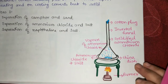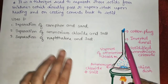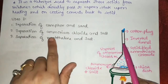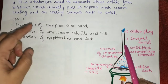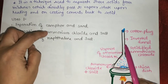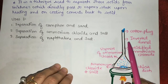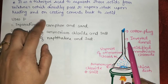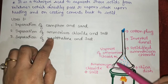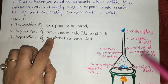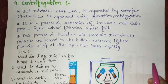This sublimation technique can be used to separate camphor from sand, ammonium chloride from salt, or naphthalene from salt. Camphor, ammonium chloride, and naphthalene all show the property of sublimation — whenever heating is done, they evaporate and get collected at the side walls of the funnel.